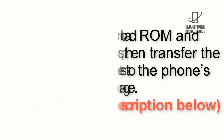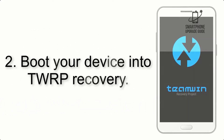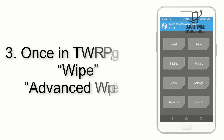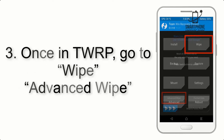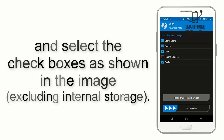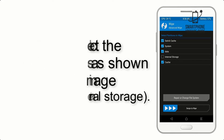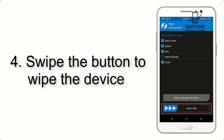Step 2: Boot your device into TWRP recovery. Once in TWRP, click on Advanced Wipe and select the checkboxes as shown in the image, excluding internal storage. Step 4: Swipe the button to wipe the device.